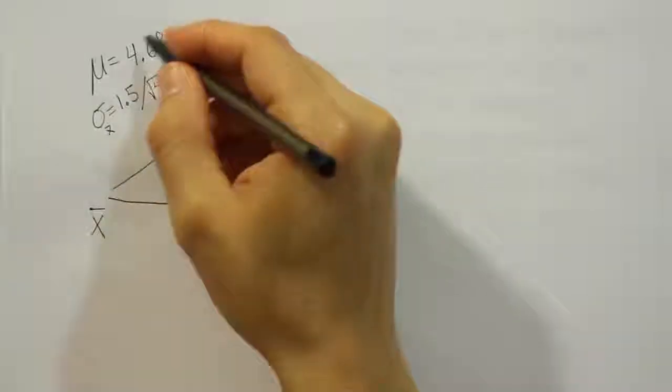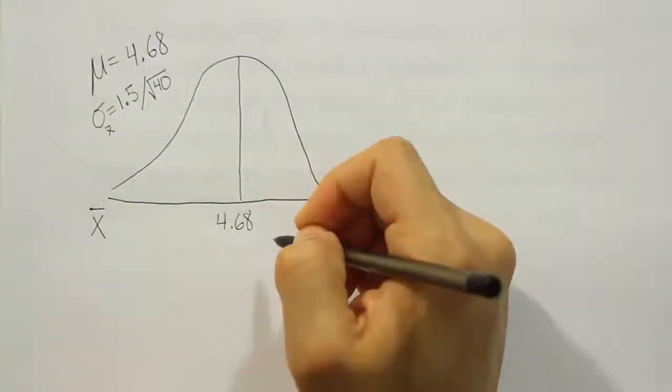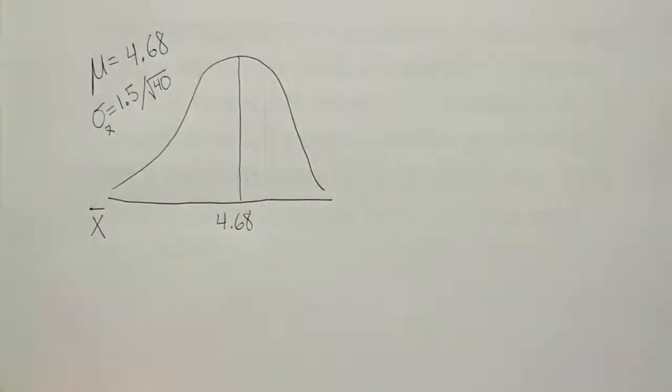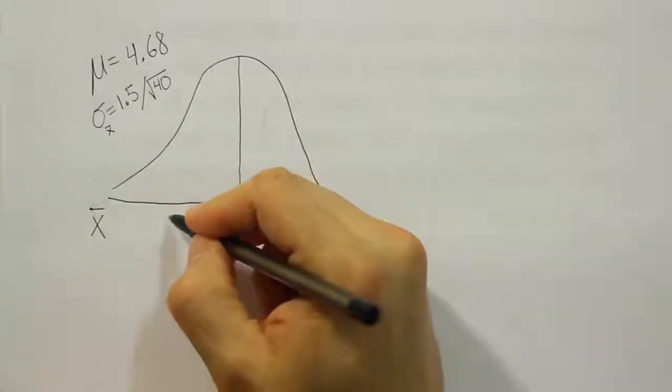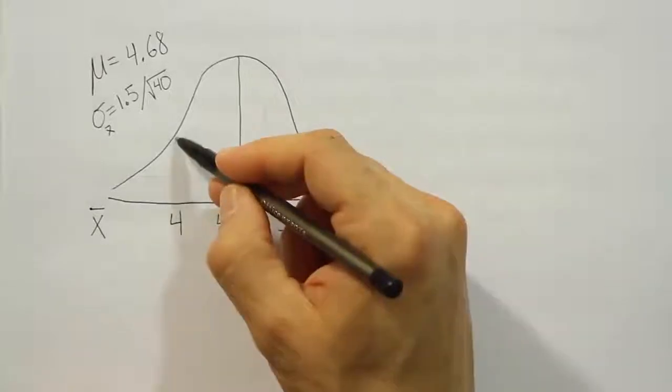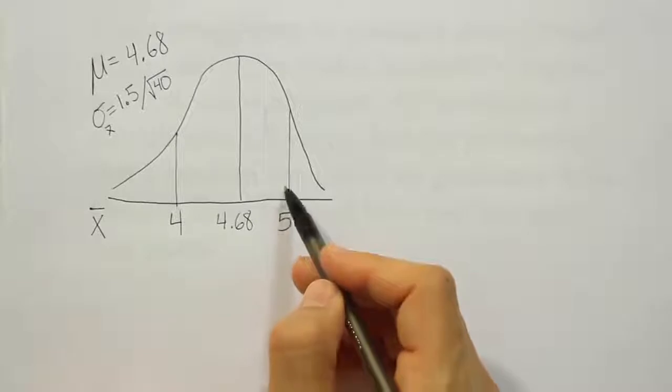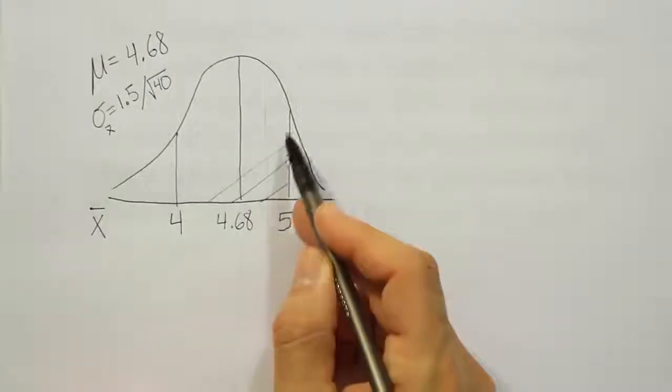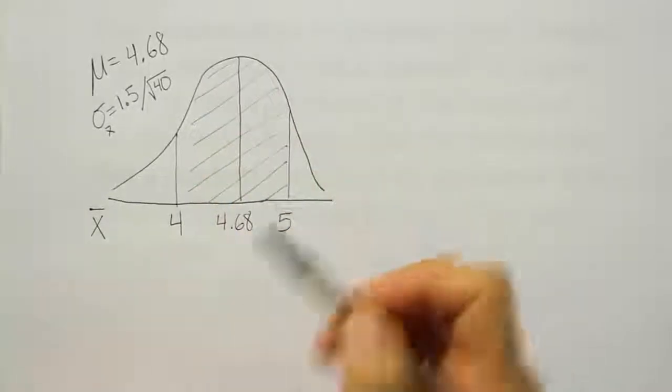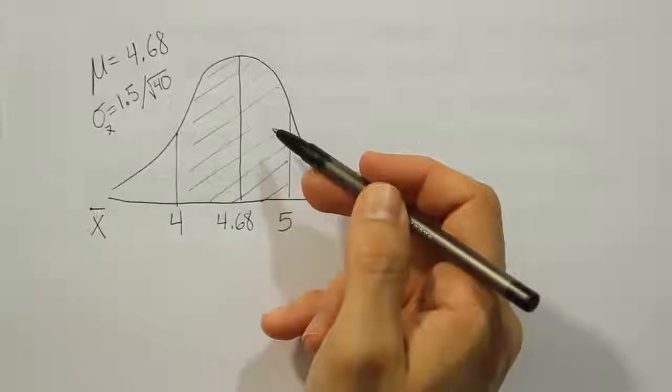Now from there, what we're going to do is enter that mean in the center of our drawing here, 4.68. And then what we're going to do is take the number they asked us about, which is the probability they finished between four and five years, and we're going to put that on the drawing as well. So four and five years is here. Between four and five years means the area we're looking for, which corresponds to the probability we're looking for, is the area between four and five. We need to figure out the area here so we can get our answer to the probability question.